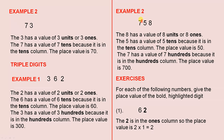Example 2: 758. The 8 has a value of eight units, or eight ones. The 5 has a value of five tens, because it is in the tens column — the place value is 50, and five tens are 50. The 7 has a value of seven hundreds, because it is in the hundreds column. The place value is 700, because seven times 100 is 700.